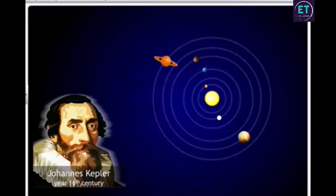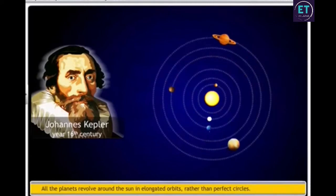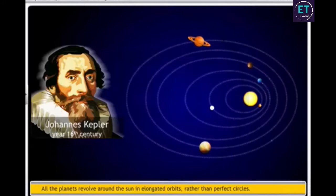In the early 16th century, Kepler studied the shortcomings of the Copernican model using the data gathered by his teacher Tycho Brahe. Kepler concluded that all the planets revolve around the sun in orbits which were elongated rather than perfect circles.